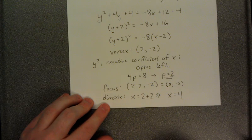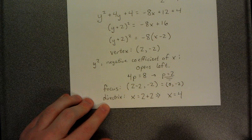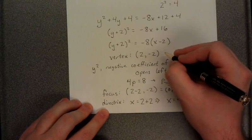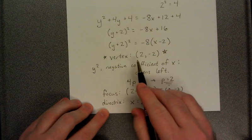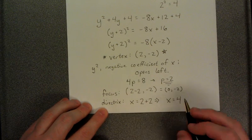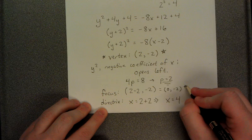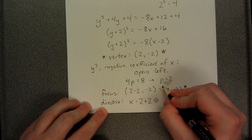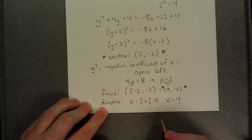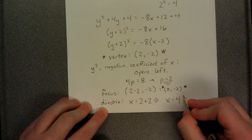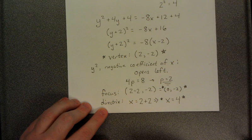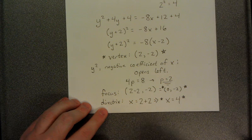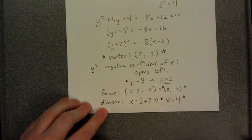So when we put it all together, the three pieces of information asked of us to find in this problem, we have the vertex at the point 2, negative 2. The focus at 0, negative 2. And the directrix at x equals 4, the vertical line. Well, that concludes this problem. I'll see you on the next one.